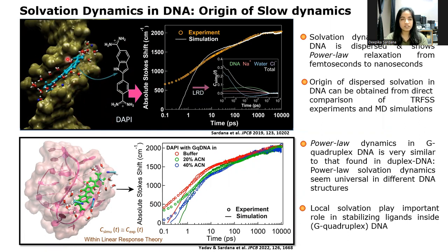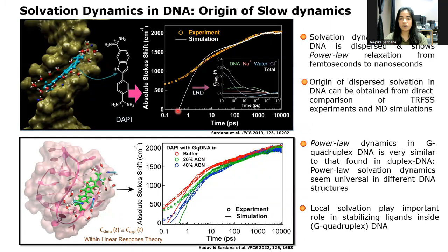For Watson-Crick type DNA structure, we see that dynamics remains dispersed from 100 femtoseconds to 10 nanoseconds. And to find out the origin of such dispersed dynamics, we carry out atomistic MD simulations where we see that the origin of this slow solvation dynamics lies in the coupled DNA and water motions.